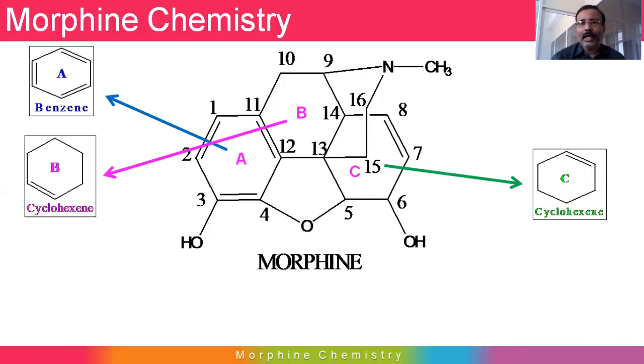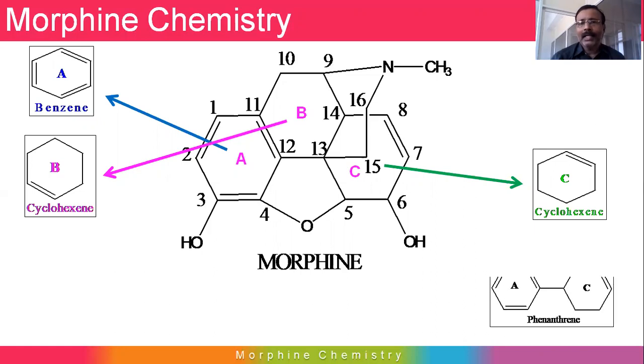When we fuse Ring A, B, and C together, this tricyclic nucleus is called phenanthrene.